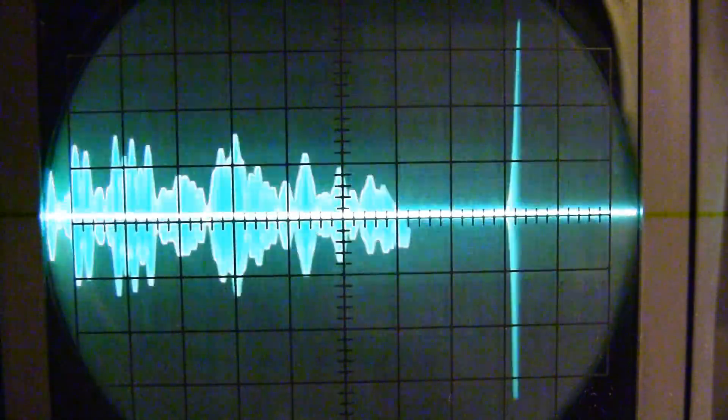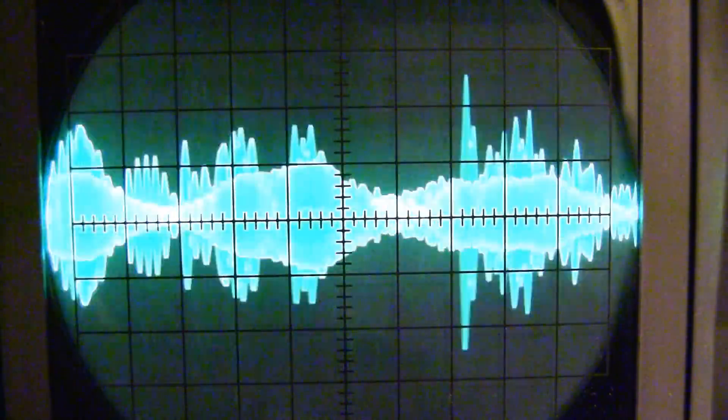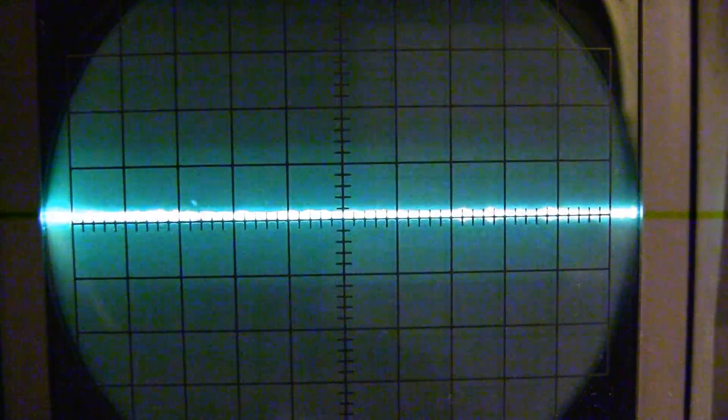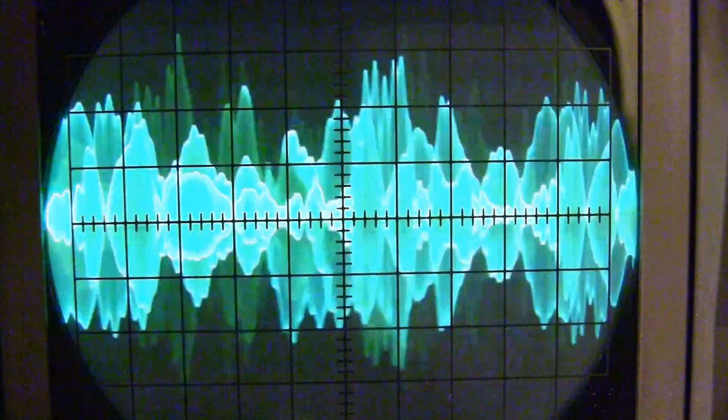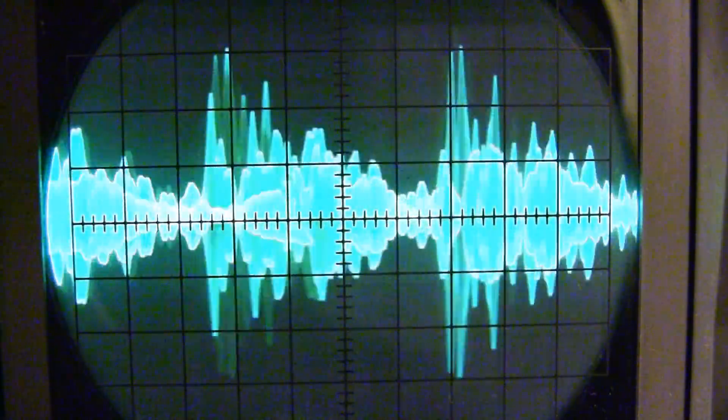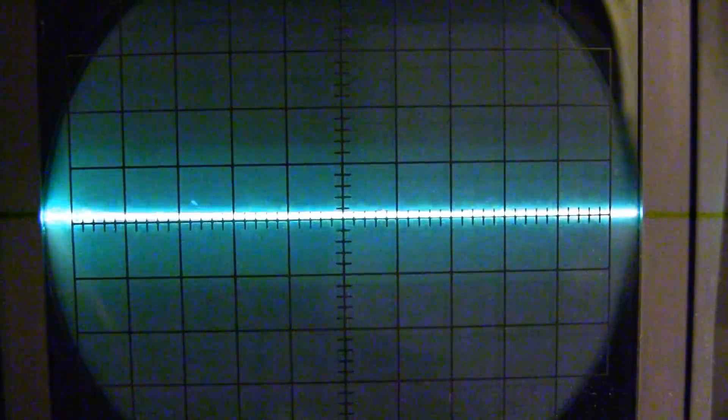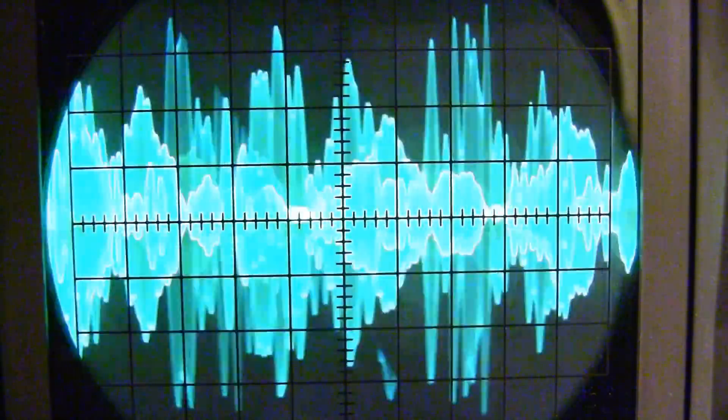This video is part two of a talk that I gave to the Fairlawn Amateur Radio Club in April 2018. Part one, which was posted earlier, talked about the basics of oscilloscopes and how to use them, as well as the differences between analog and digital scopes. This is part two.